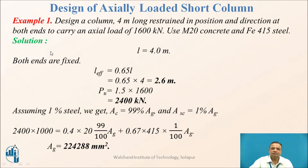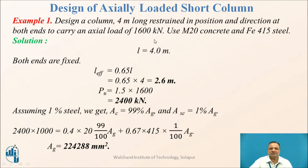Design example: Design a column 4 meters long, restrained in position and direction at both ends, to carry an axial load of 1600 kilonewtons. Use M20 concrete and Fe415 steel.